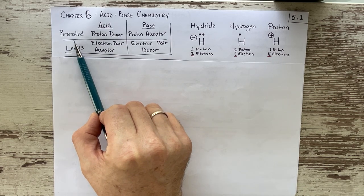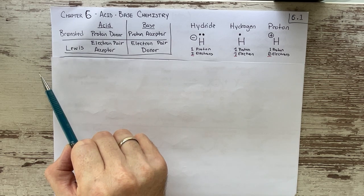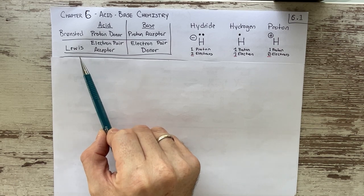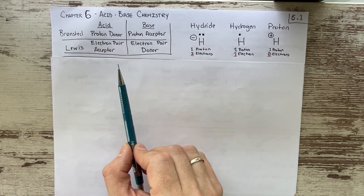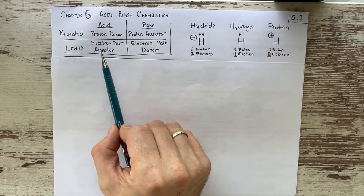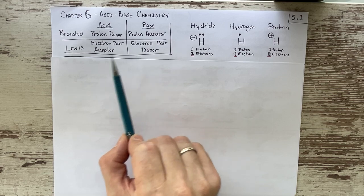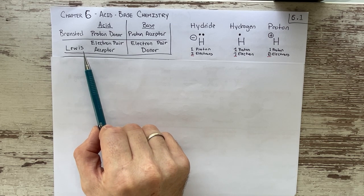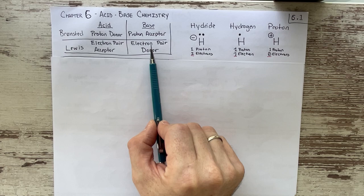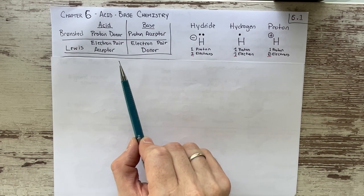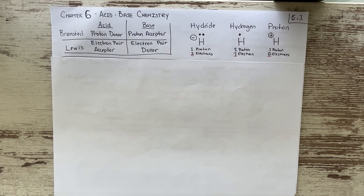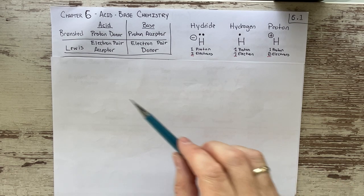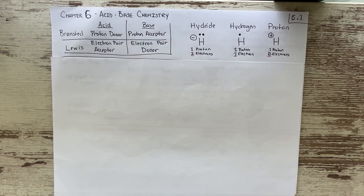The Bronsted definitions of acids and bases came early on. Lewis definitions came later in the early 1900s by chemist G.N. Lewis, who defined acids and bases more broadly by thinking about what the electrons are doing. Lewis defined an acid as an electron pair acceptor and a base as an electron pair donor. The Lewis definition is expanded to molecules that don't just have protons but can accept a pair of electrons.